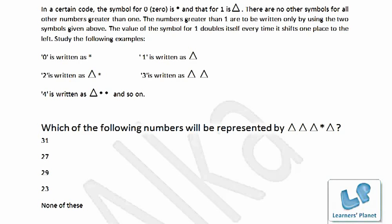We have discussed various types of number systems — decimal, which we've used since childhood, binary, tertiary, hexa, hepta, and octa. Now, which types of questions are asked in examinations? In reasoning, various types of decoding questions are asked. In CAT examinations, direct questions on base systems are asked, and in bank PO exams, coding-decoding questions are asked.